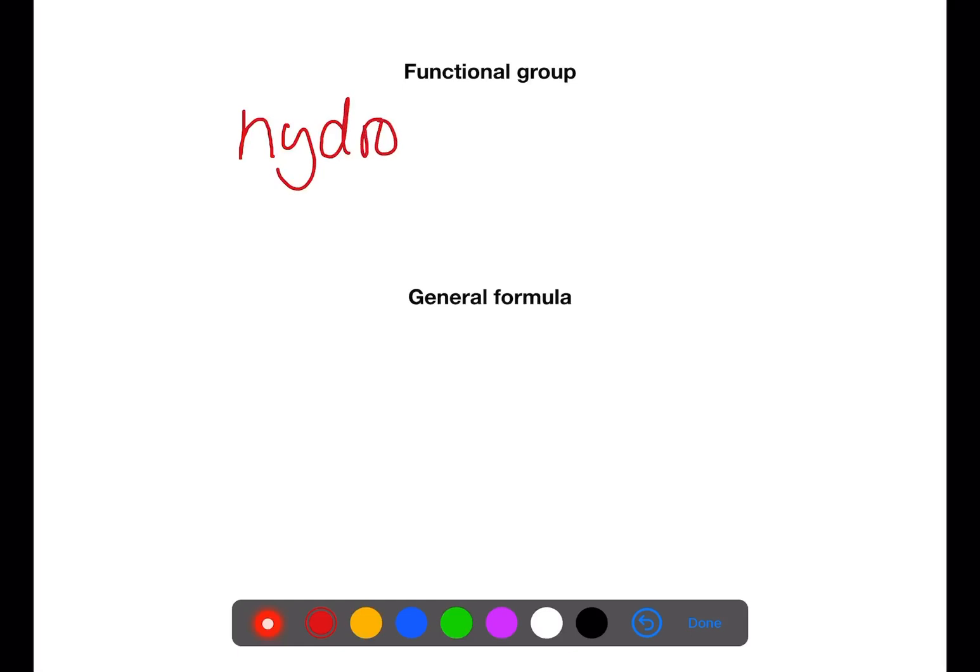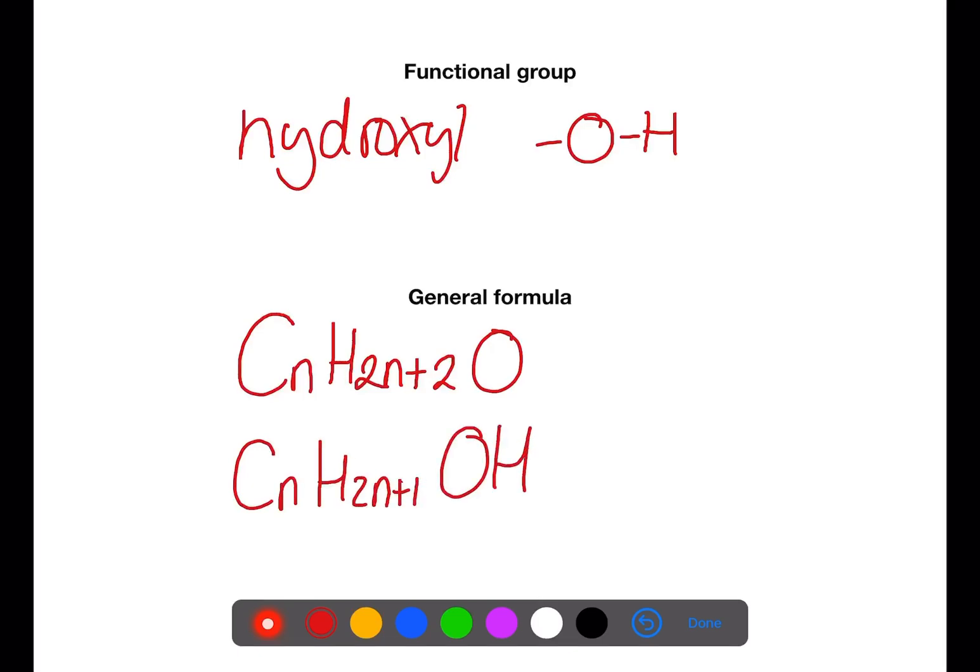First of all, let's look at the structures of the alcohols. The functional group of the alcohol family is the hydroxyl group. This is a group containing an oxygen and a hydrogen. The general formula which can be used to represent the alcohol family is CNH2N+2O, or you can have CNH2N+1OH to show the functional group.